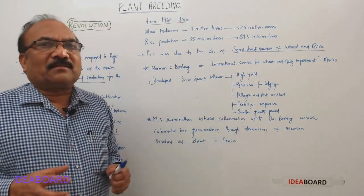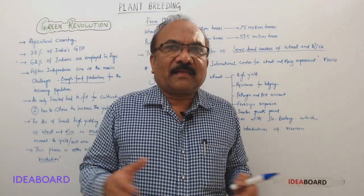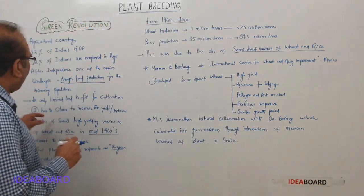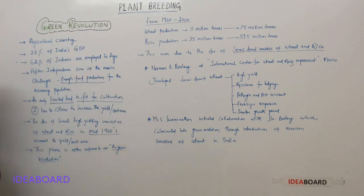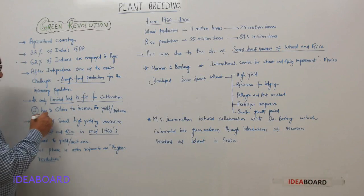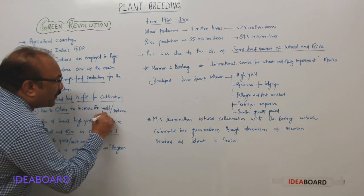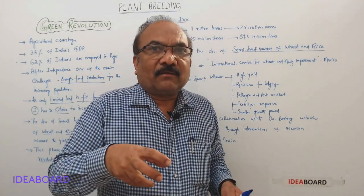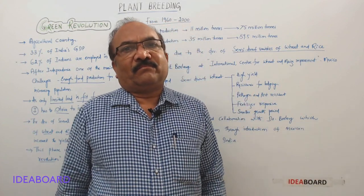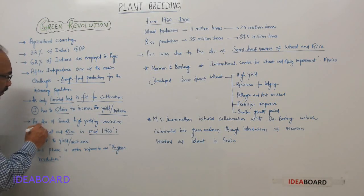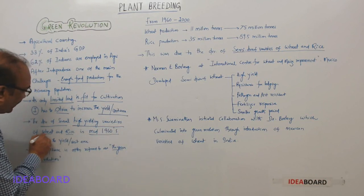One problem is that in India we have so much land, but not everything is cultivable land. So we have limited cultivable land — only limited land is fit for cultivation. That is why India has to strive to increase the yield per unit area of available cultivable land. So that is a big challenge, and it is solved by the development of several high yielding varieties of wheat and rice.